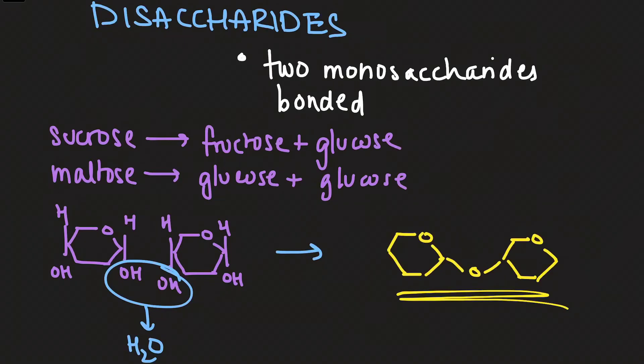Now, the bond between any two monosaccharides in a carbohydrate is called a glycosidic linkage.